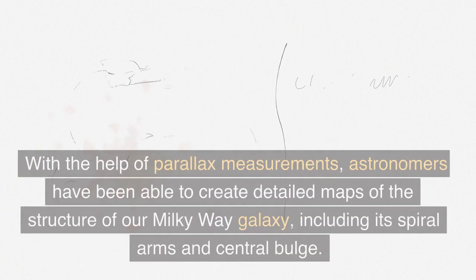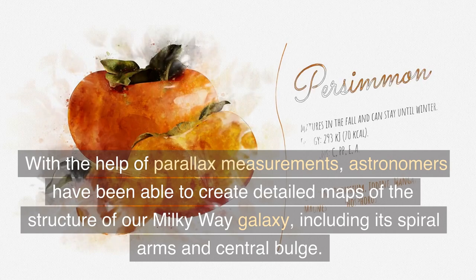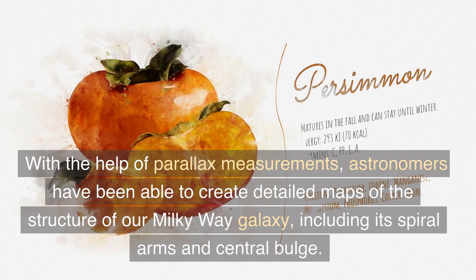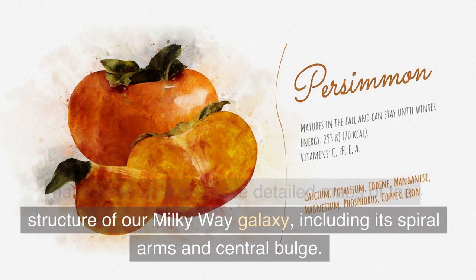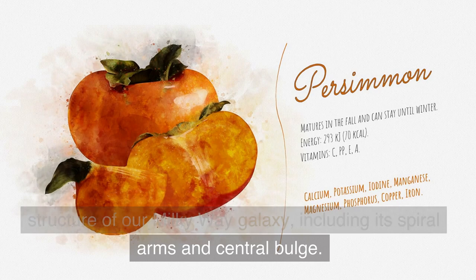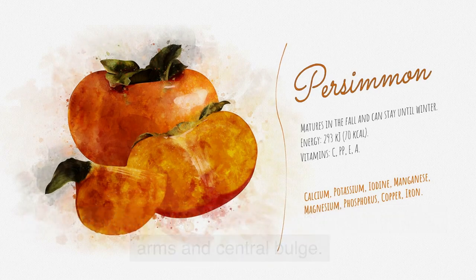With the help of parallax measurements, astronomers have been able to create detailed maps of the structure of our Milky Way galaxy, including its spiral arms and central bulge.